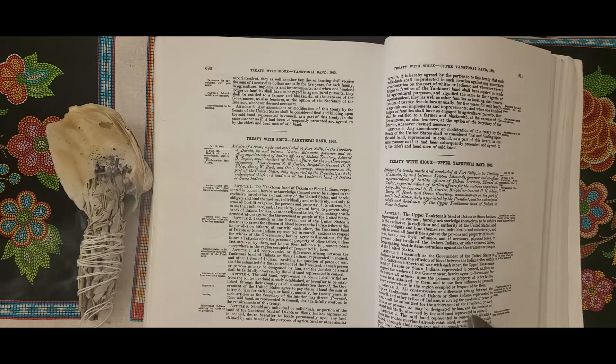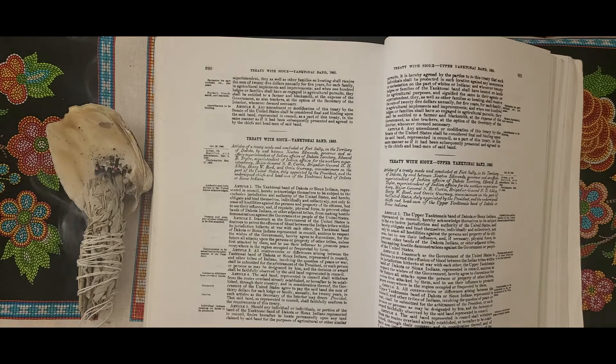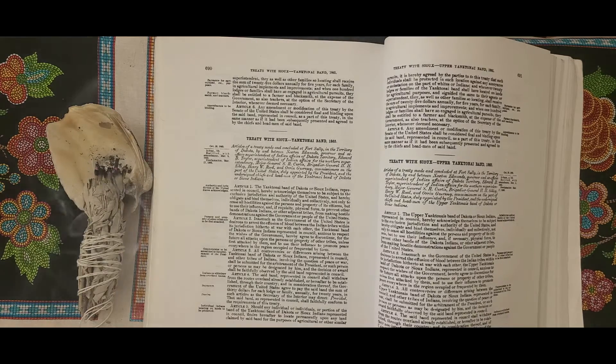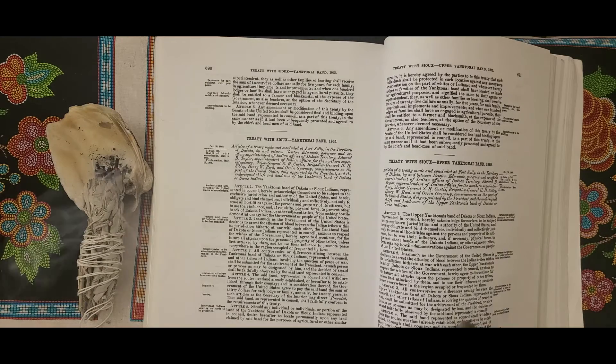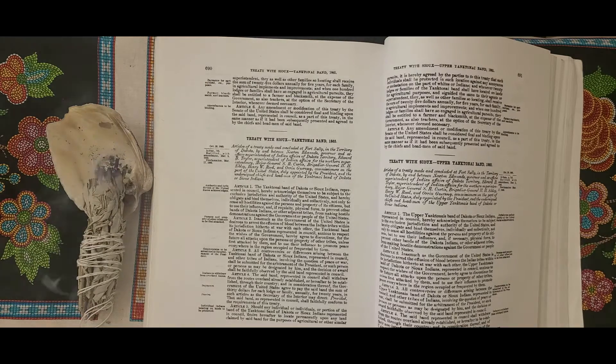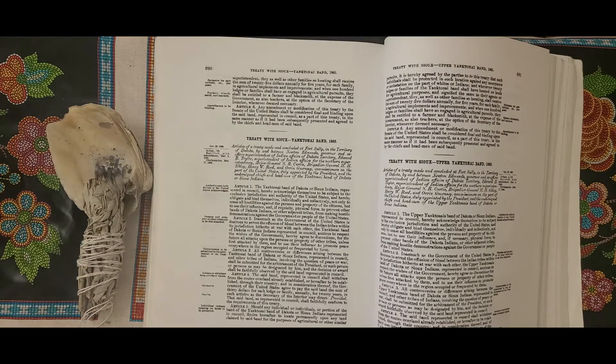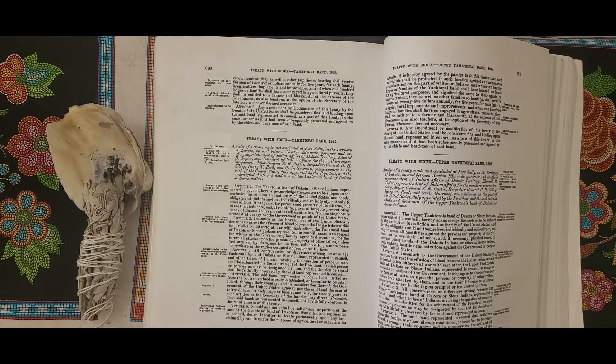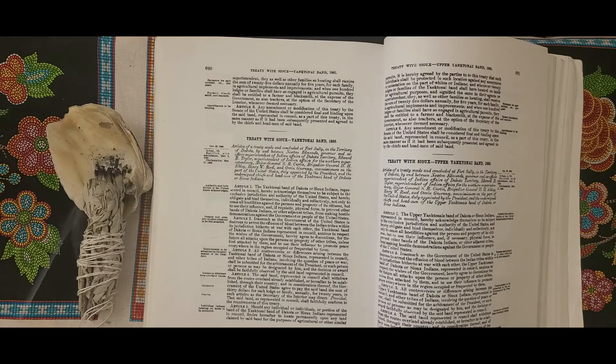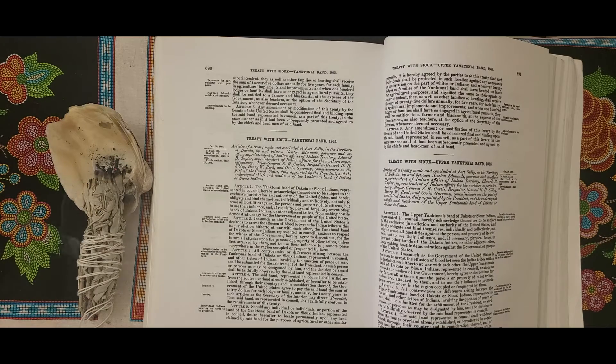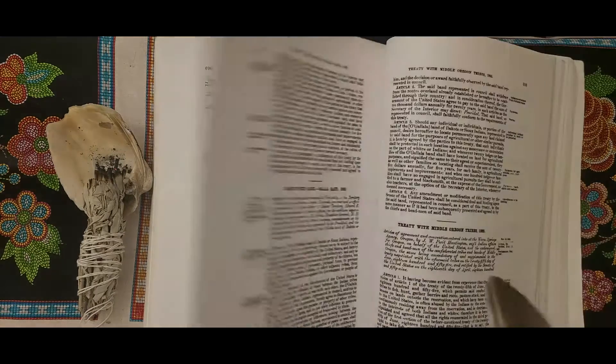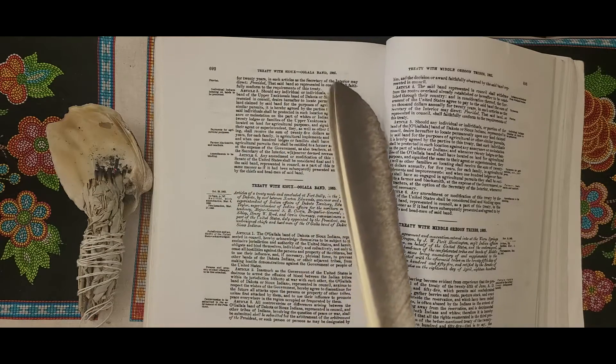Article 4: The said band represented in council shall withdraw from the routes overland already established or hereafter to be established through their country, and in consideration thereof and of their non-interference with the persons and property of citizens of the United States traveling thereon, the government of the United States agrees to pay the said band the sum of ten thousand dollars annually for twenty years in such articles as the Secretary of Interior may direct, provided that said band so represented in council shall faithfully conform to the requirements of this treaty.